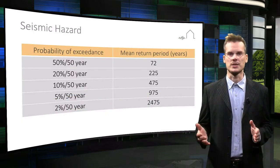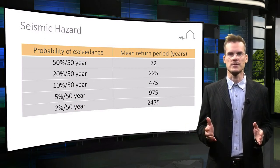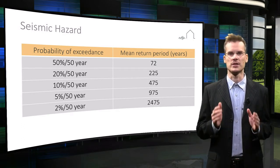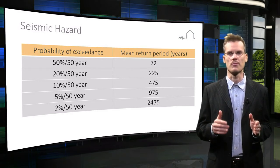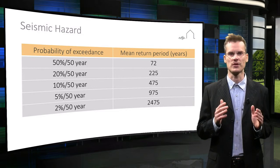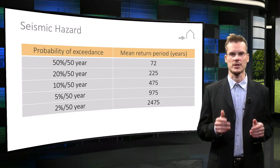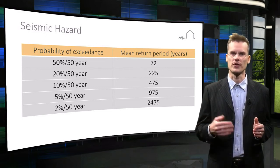Seismic hazard, as explained in a previous lecture, is the probability that in a given geographic area and within a given window of time, the intensity of the earthquake will exceed a given threshold. This table shows some probability of exceedance in 50 years usually considered in seismic assessment studies, which can be related to the return period of an earthquake.